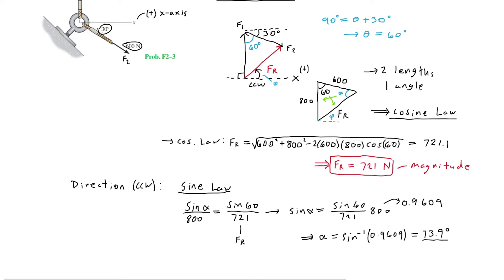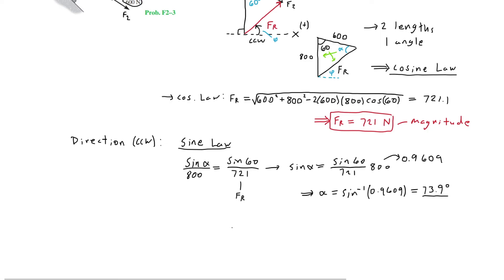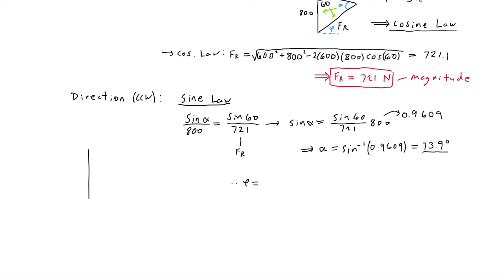Now that we know what alpha is, we need to find what phi is going to equal. Redrawing the triangle once again, we know that this is 30 degrees. This part right here, if we split the triangle, is also going to equal 30 degrees. This angle at the bottom is phi.